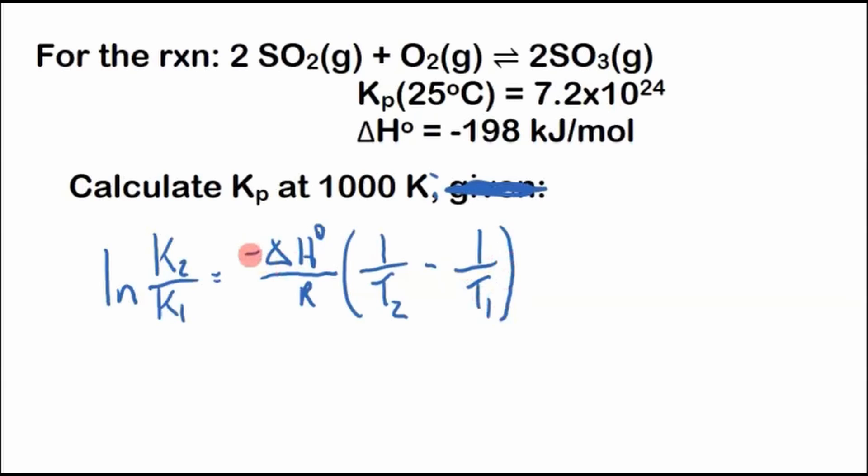Now be careful. If there isn't a negative here, then this is T1. But if there is a negative here, then this is T2, just like normal, final minus initial. So sometimes this negative trips people up.